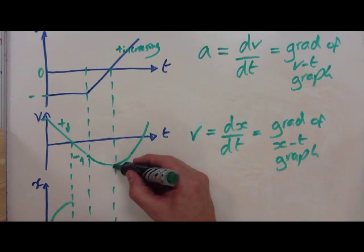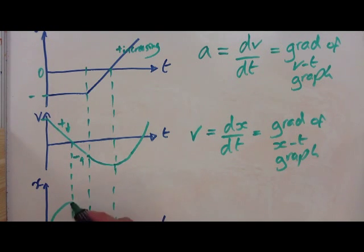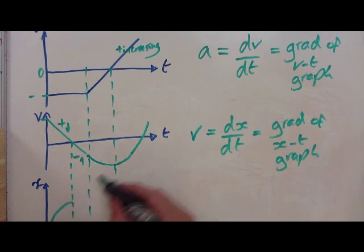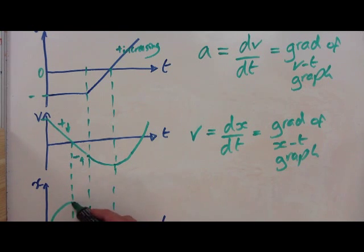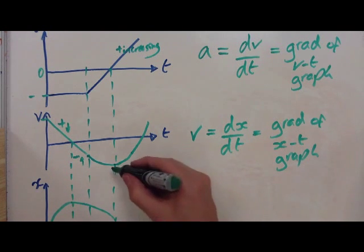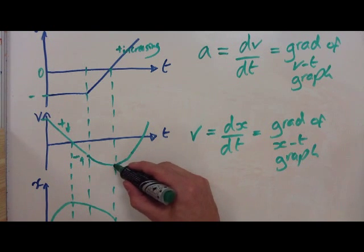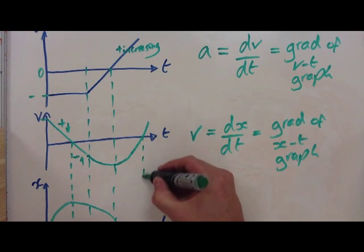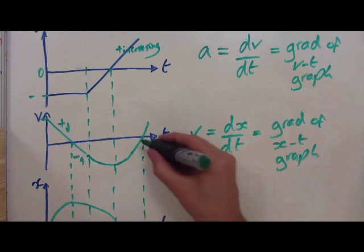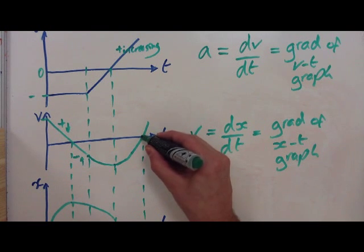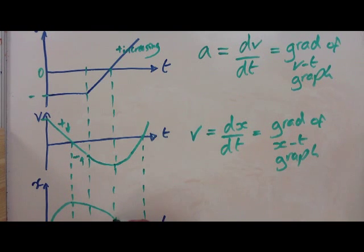Until this point here. It continues to get more and more negative until it reaches a maximum. So you can get a maximum slope there. And then, it starts to, still negative, but starts to get lower and lower and lower until it reaches zero again. Zero gradient. That points to zero there. Therefore, this must have zero gradient. So it continues to get less and less negative now until it gets to here.